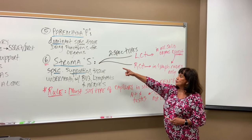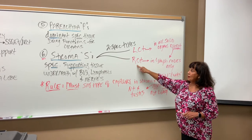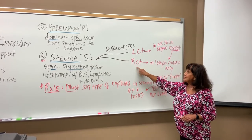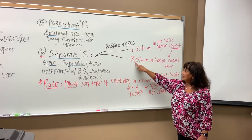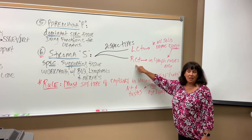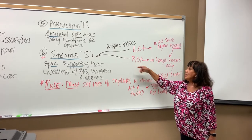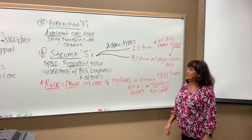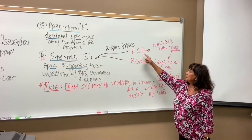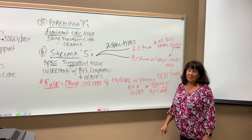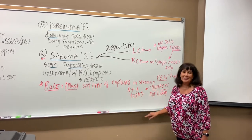There are two kinds of stroma that all solid organs will have: it's either going to be loose CT or RCT — reticular connective tissue. RCT is only found in lymph nodes. We will only find RCT in solid lymph nodes when we study the lymphatic system in A&P 2. Most organs except for the lymph nodes are going to be loose CT, fenestrated usually, but non-fenestrated if in nervous system tissue or the testes.